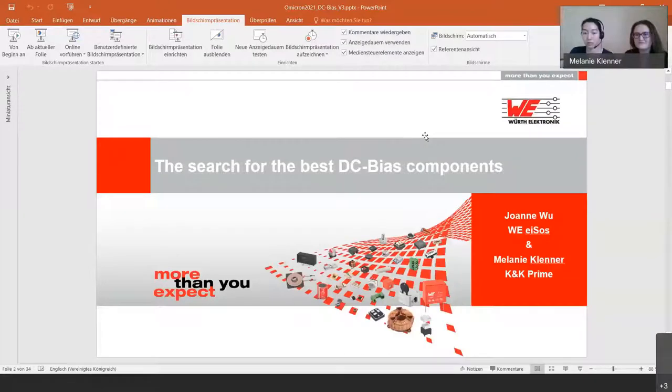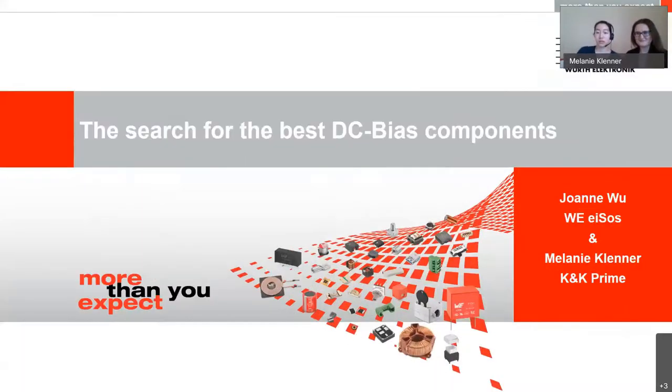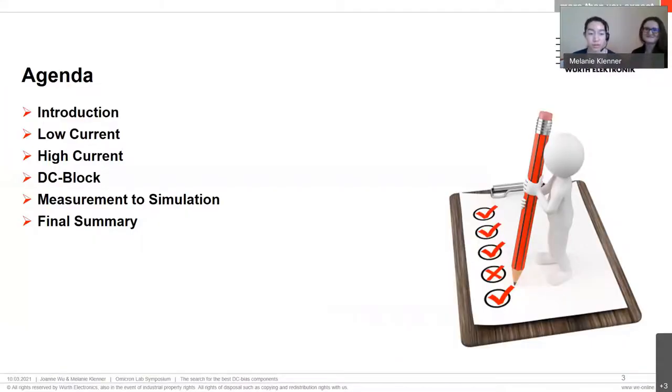Can you hear us? Okay, perfect. Then let's start. The topic for today is the search for the best DC bias components. I will start with a short introduction into the topic and then we'll split into two main categories: RF block with low current and high current examples, then DC block. Before we finish, we'll give a short information about how to use measurement data for your simulations.